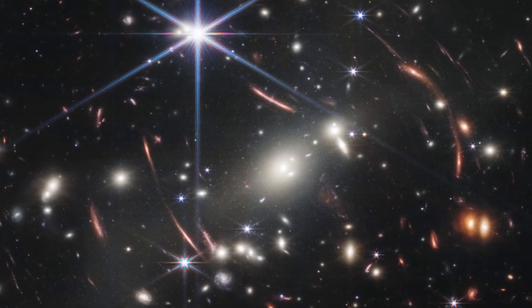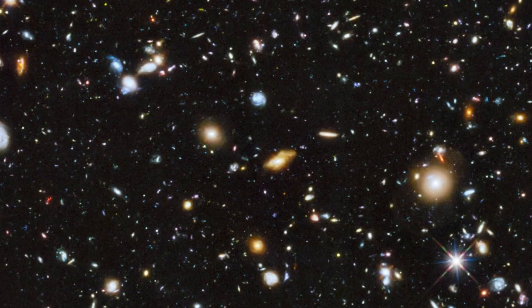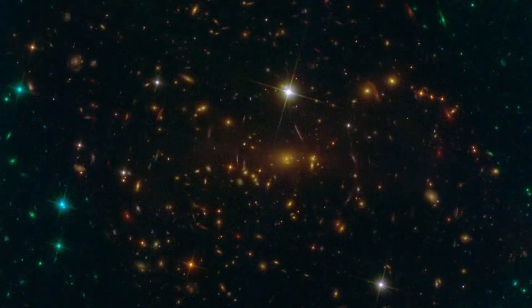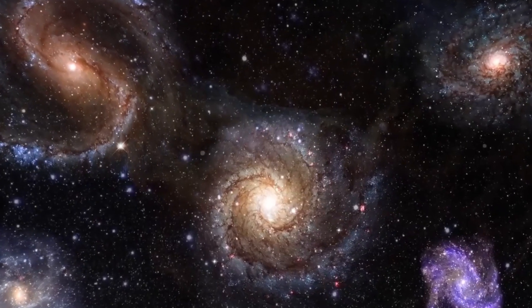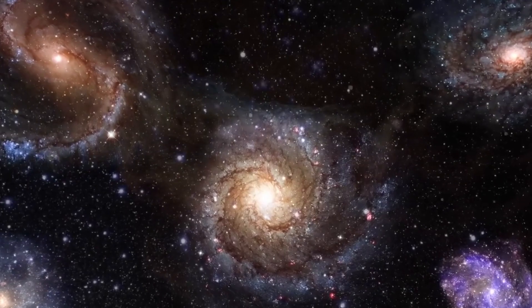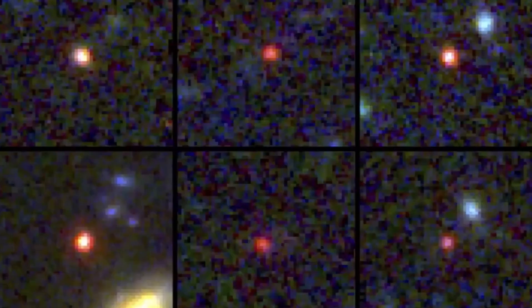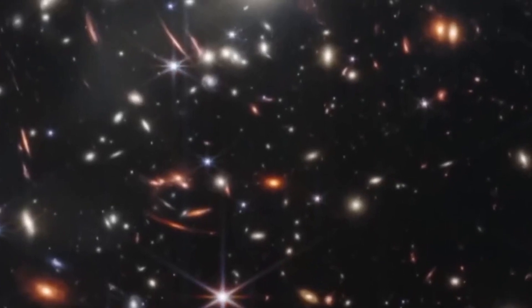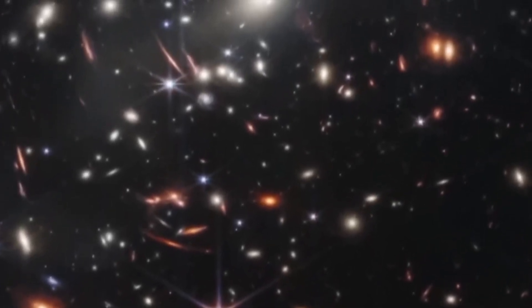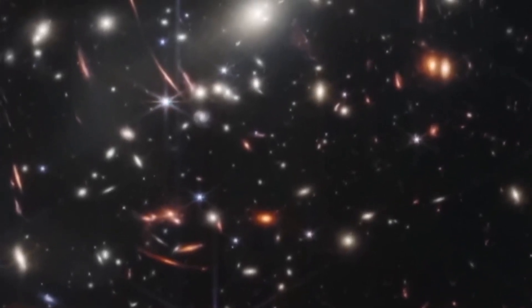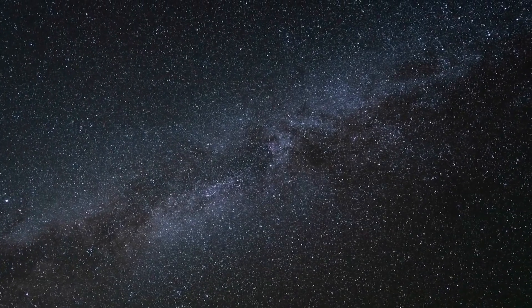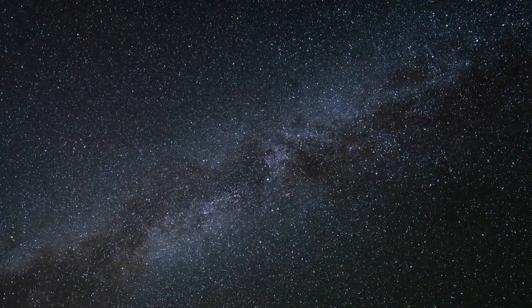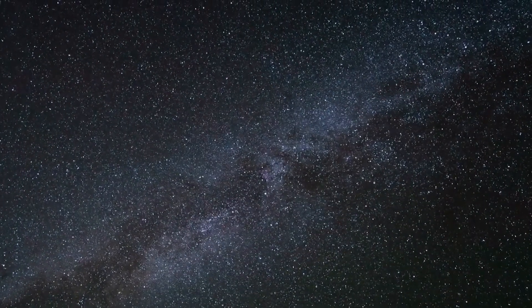Here came the next shock, because these galaxies already existed when our universe was only 500 to 700 million years old. Such early galaxies are not that surprising, however, the first star clusters should have been far more chaotic, darker, and somehow smaller. At the time of their existence 13.1 to 13.3 billion years ago, the universe was supposedly just emerging from the Dark Ages, and the first stars and groups of stars had formed.